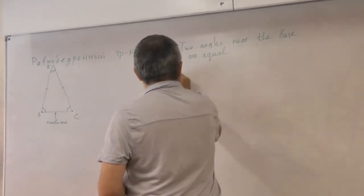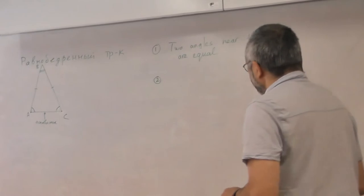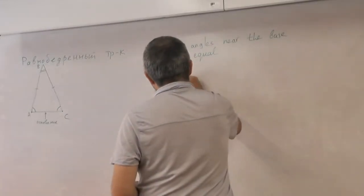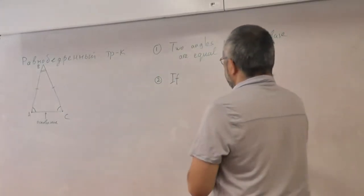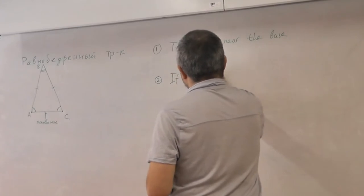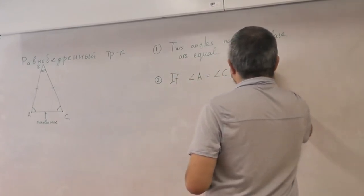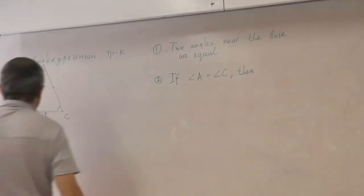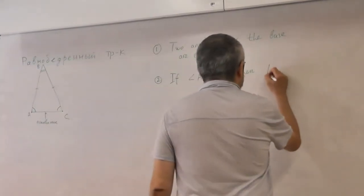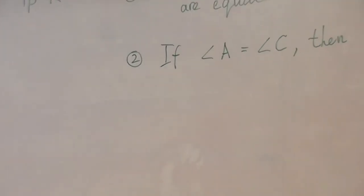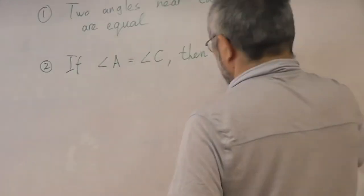So let's say this is one statement and another statement is in the other direction. If the angles are equal, then sides are also equal.